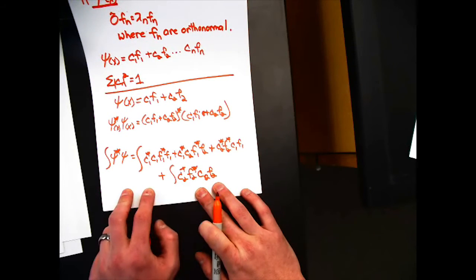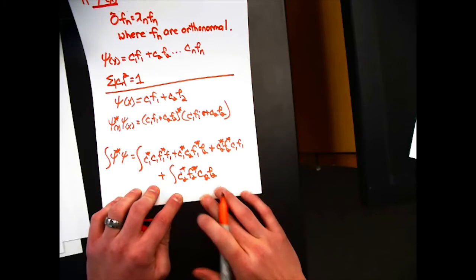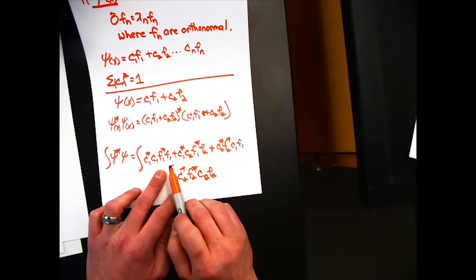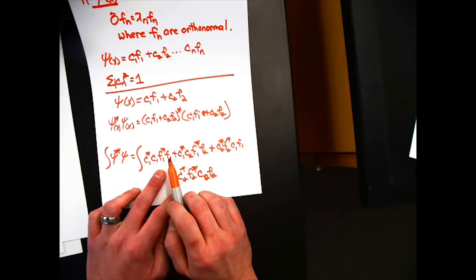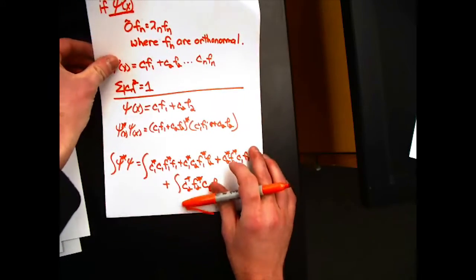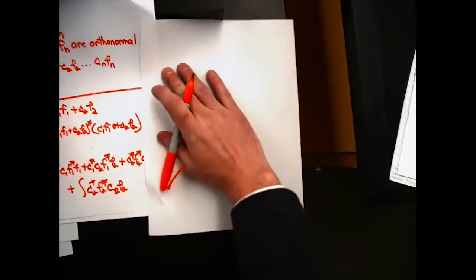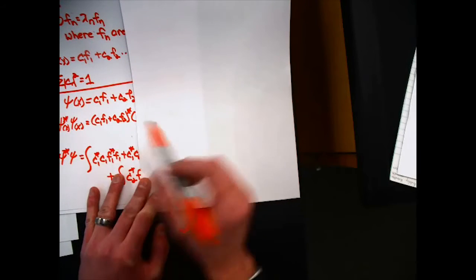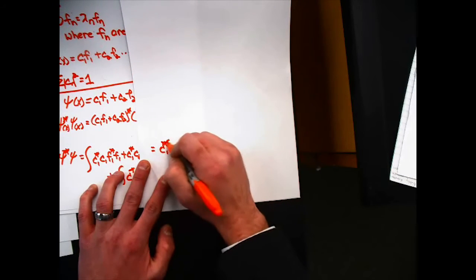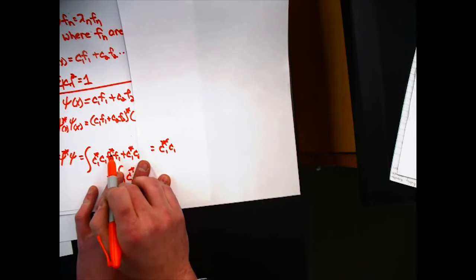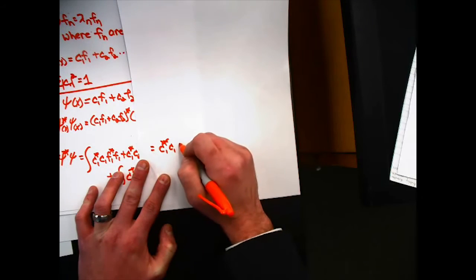So the integral over all space of f1 star f1, if these are orthonormal, then that has to be equal to 1 by definition. Let me actually do it this way. We'll do this term by term. So we have c1 star c1 times the integral of f1 star times f1 for an orthonormal set, that's equal to 1.